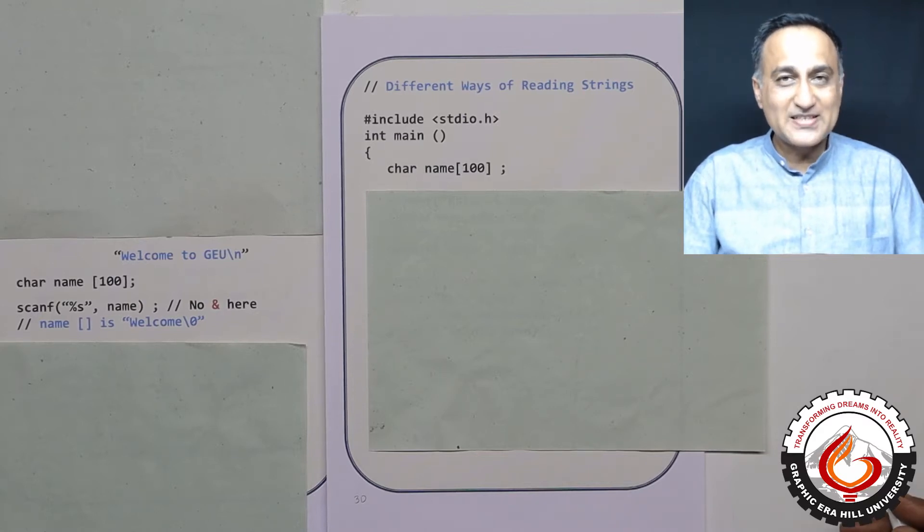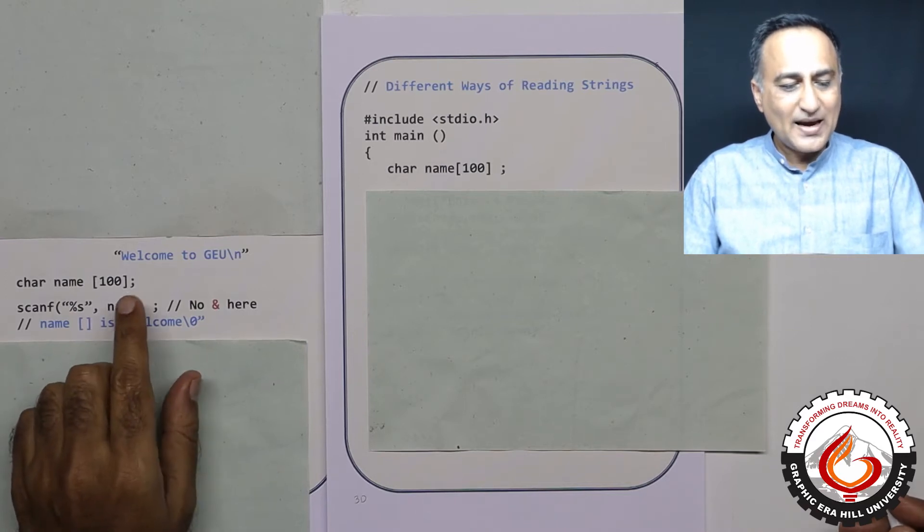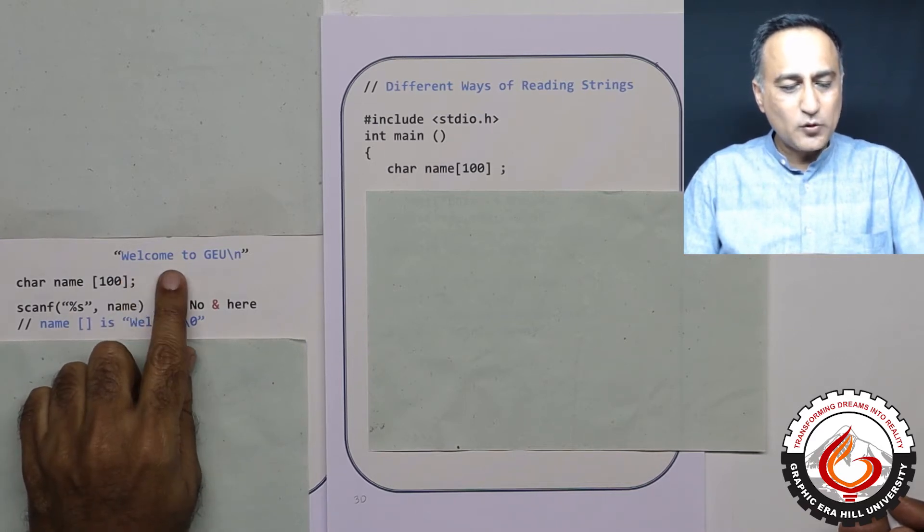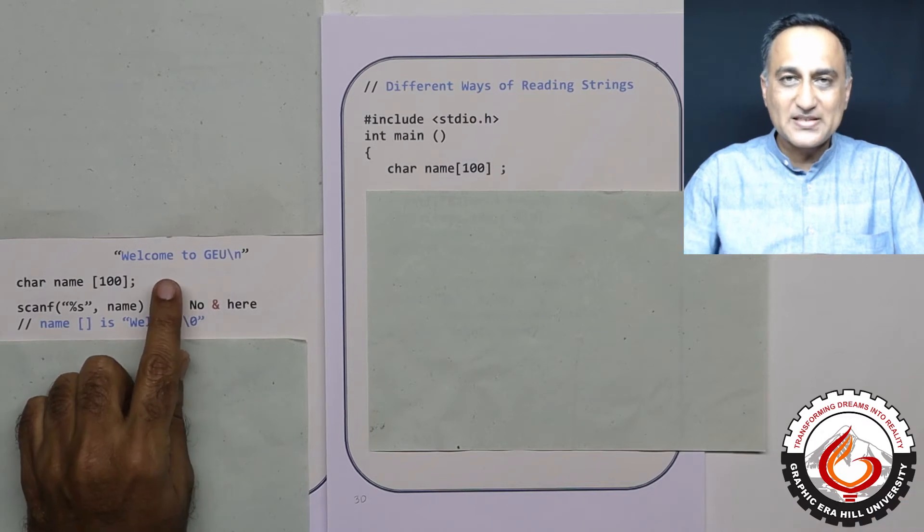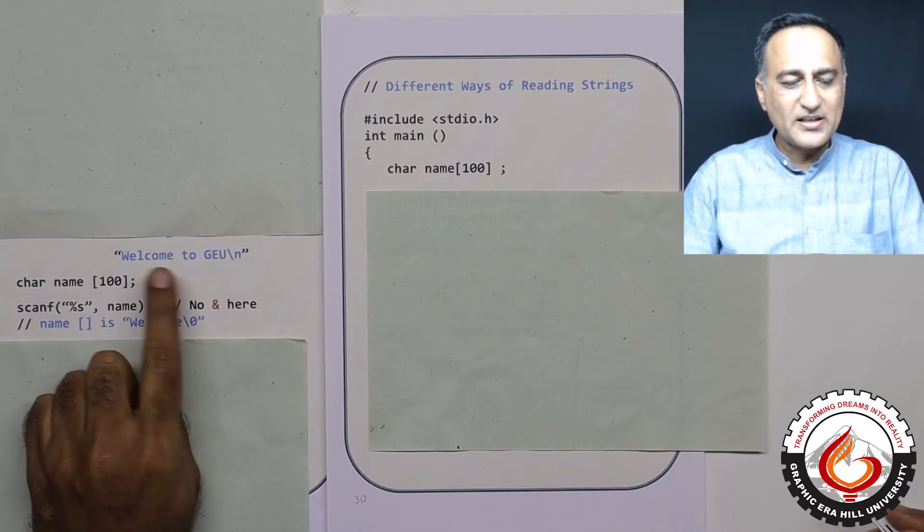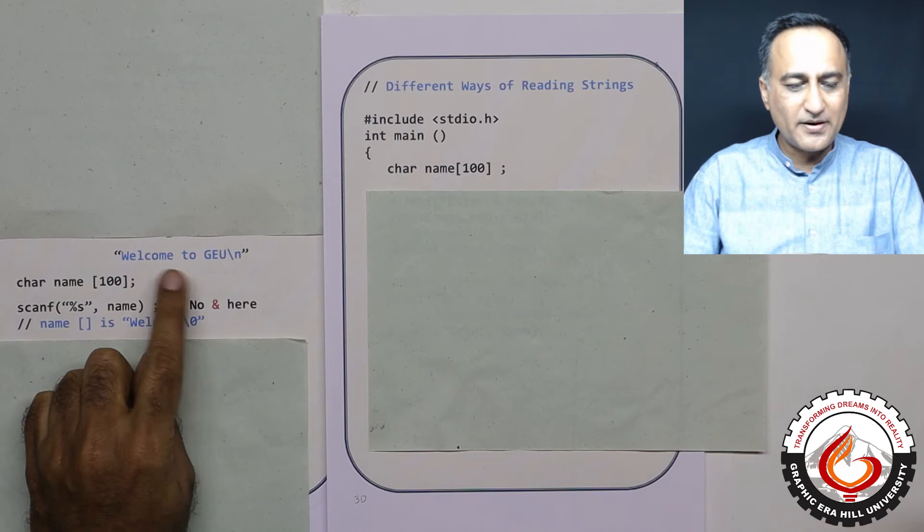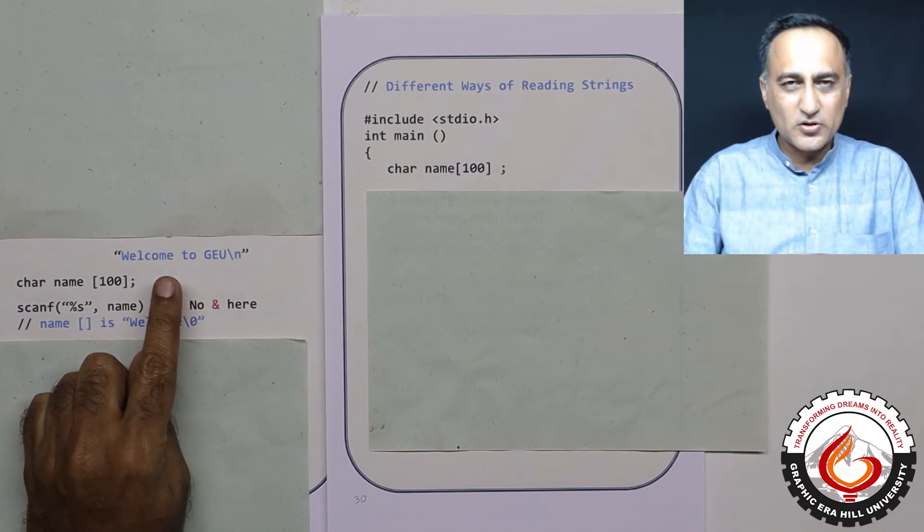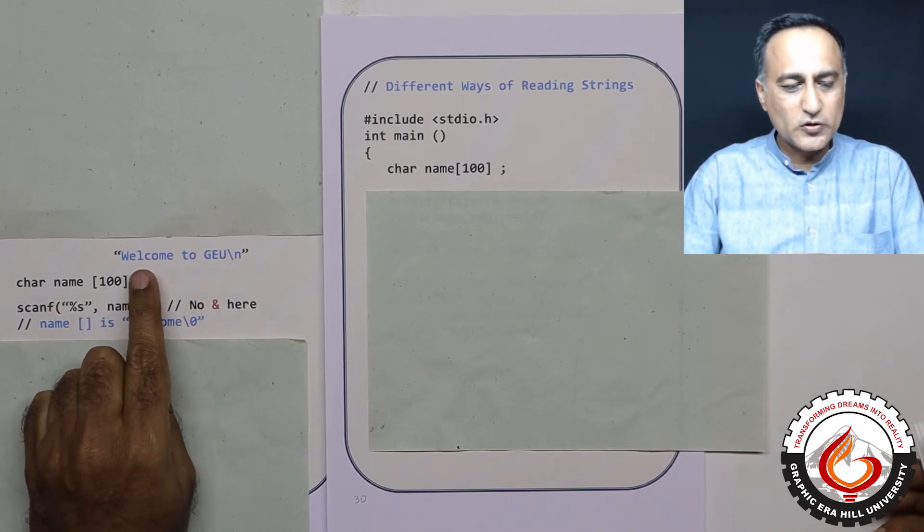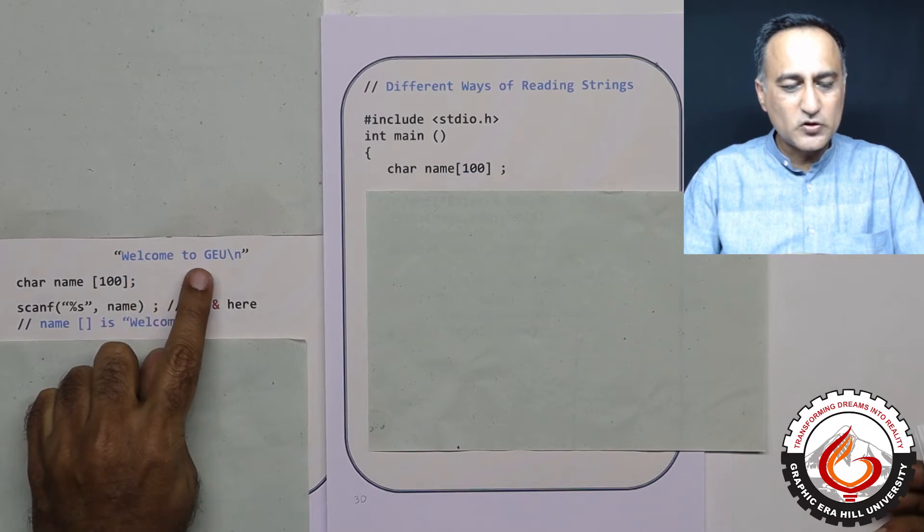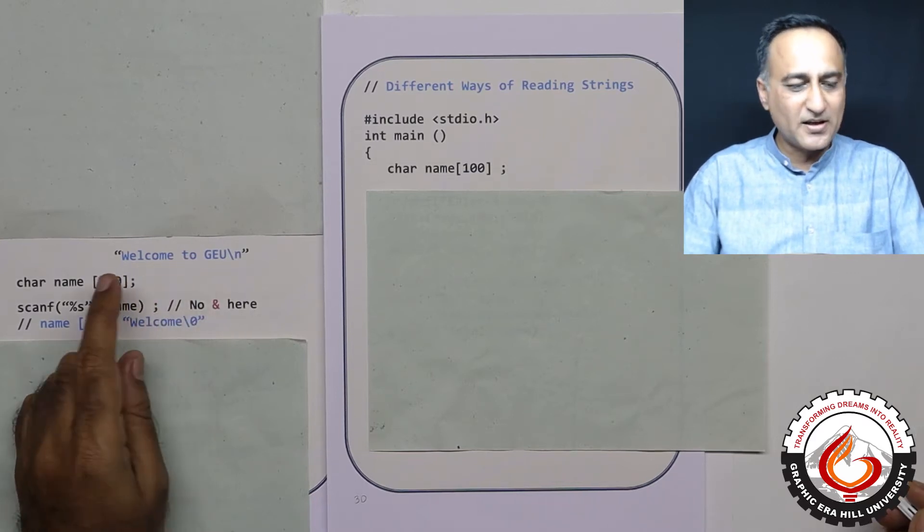What fgets does is very different from what scanf does. So suppose I type this message 'welcome to geu' and then I press the enter key. I'm not entering the double quotes, don't get confused. I'm not entering the double quotes, just to show you that it's a string those have been enclosed in double quotes. So I'm entering welcome space to space geu and then pressing the enter key.